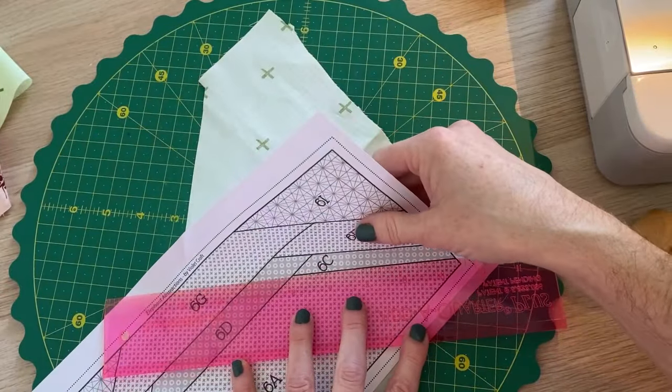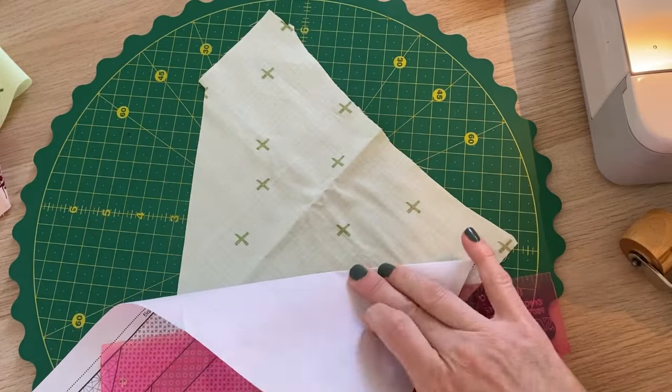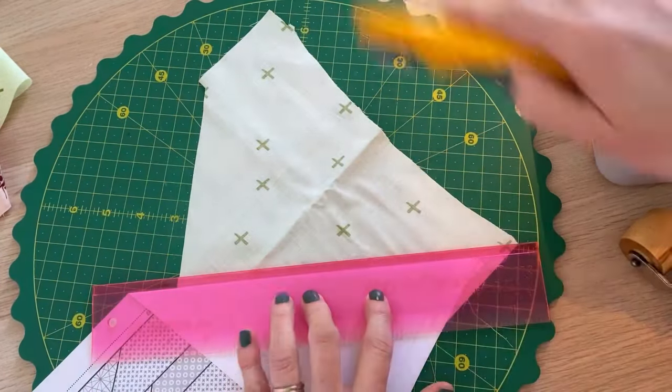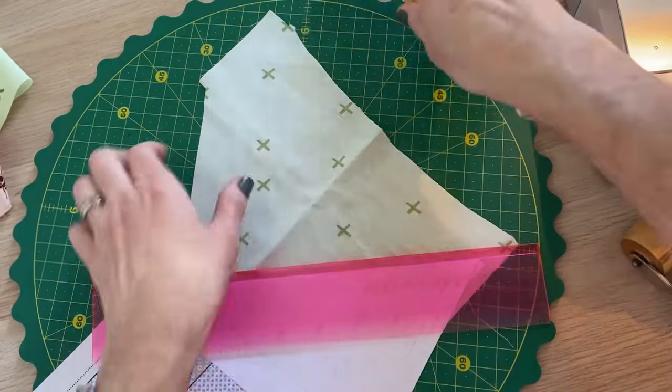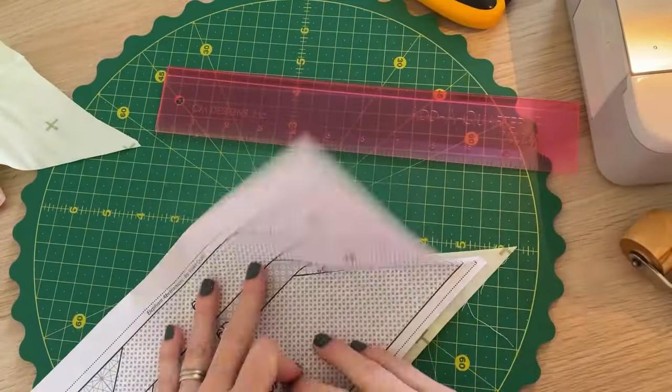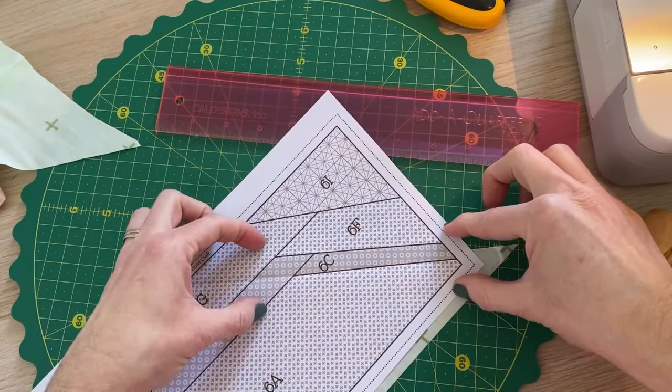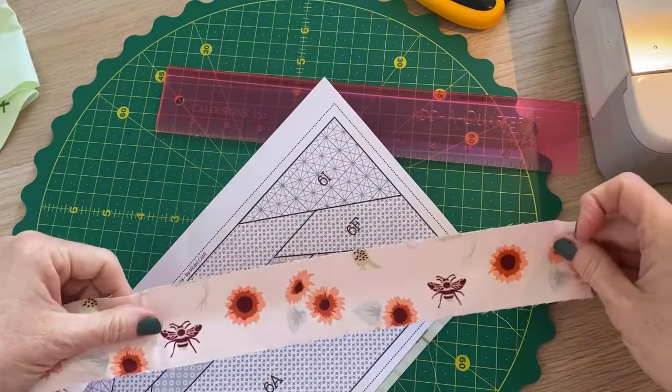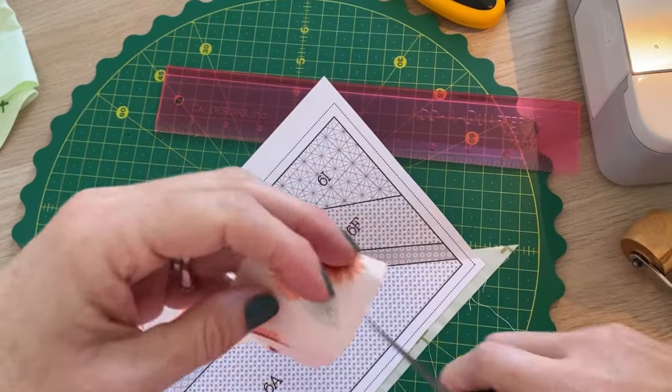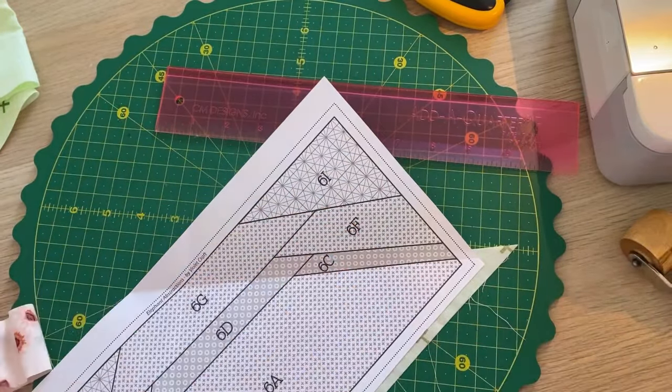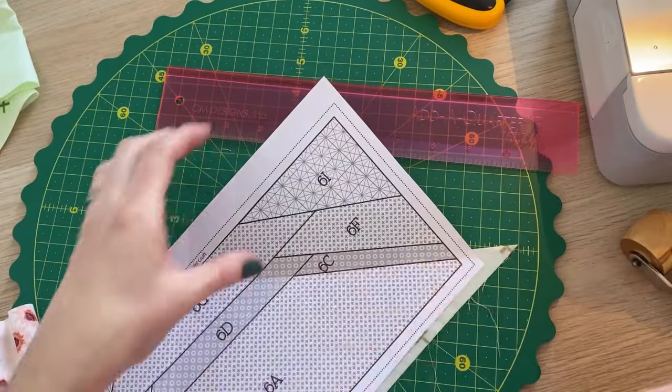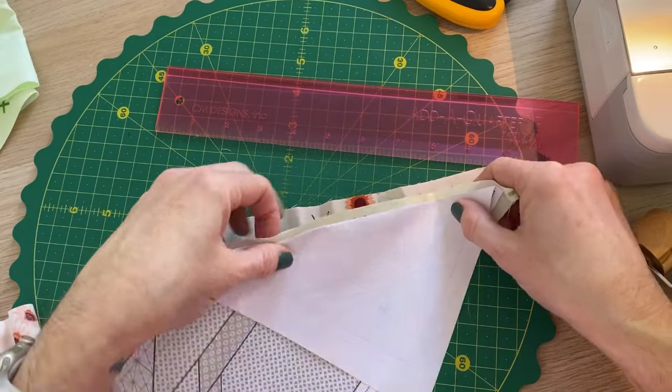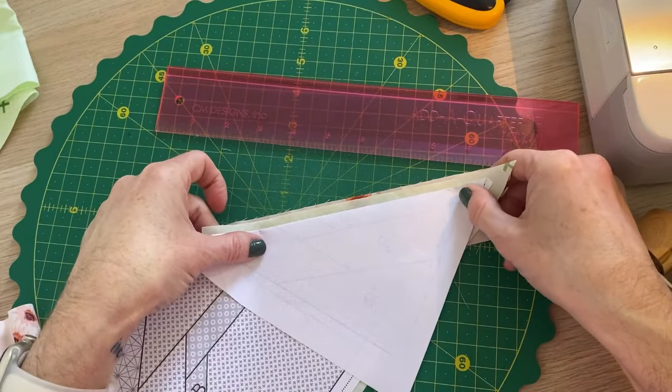Fold on this line. Trim off our seam allowance. And now we need a strip that's at least this big, which this one's huge. Nice big piece of fabric. We're going to go right sides together, matching our seam allowance.